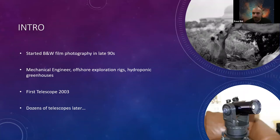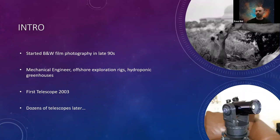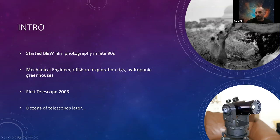I started with black and white photography back in the late 90s — it had its charm, with the dark room and the chemicals. After that I was working on offshore installations on rigs, and then hydroponic greenhouses and farms, both in the middle of nowhere. These two jobs put me under the vastness of the sky and I really appreciated it. Here's my first telescope, bought in 2003. I had no idea what I was doing — dozens of telescopes later, I still didn't really know, but it was fun just buying new toys.